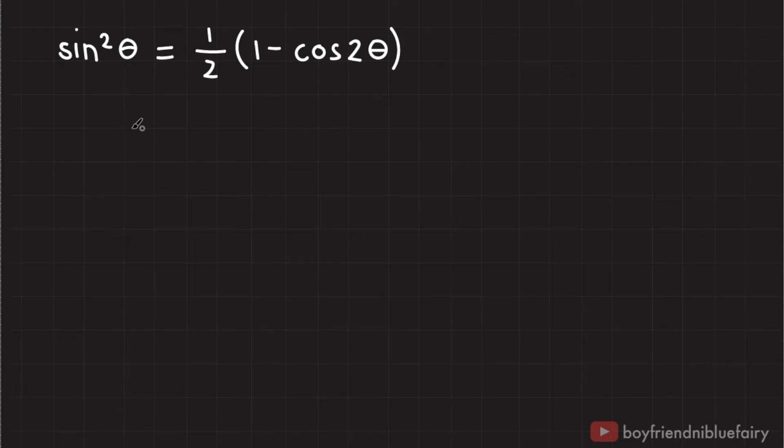In this quick video, I'll show the derivation of sin squared theta equals one half times one minus cosine 2 theta using Euler's formula or complex analysis.